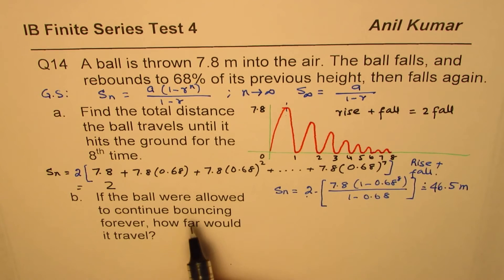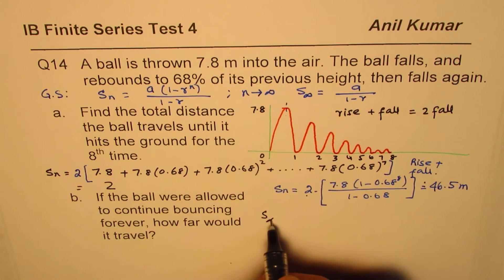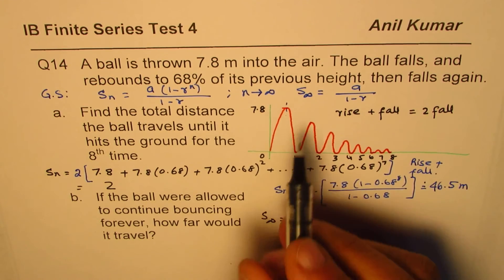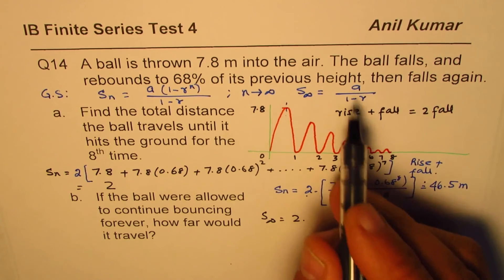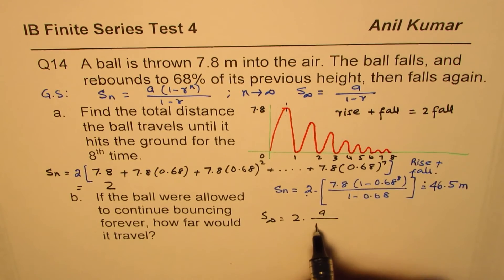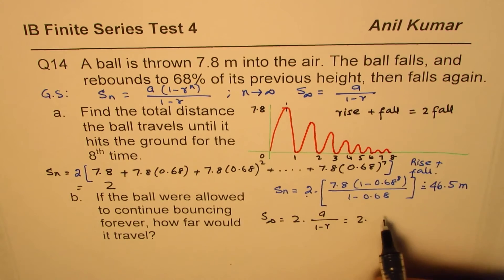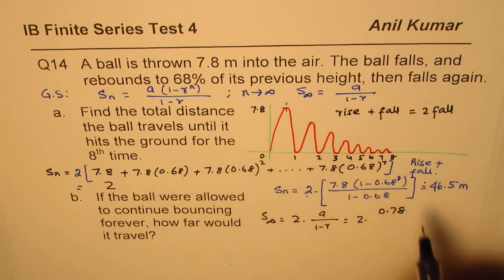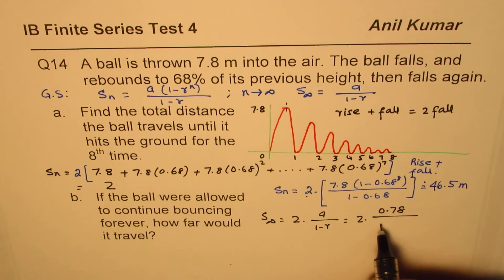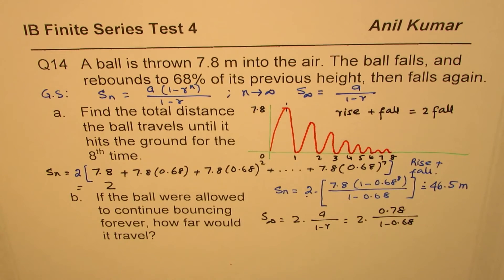Now let's find the solution for Part B. The formula for an infinite number of bounces is two times a over (1 minus r). That is two times 7.8 over (1 minus 0.68).